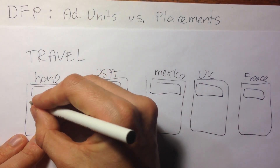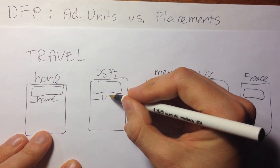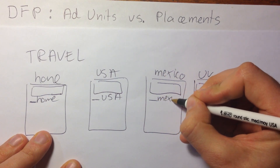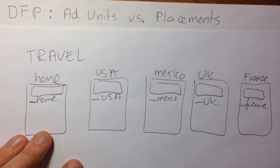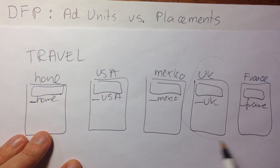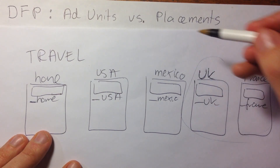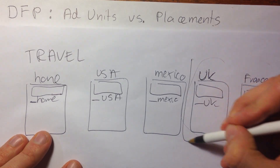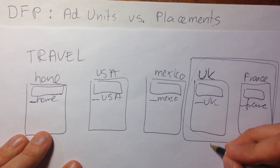For example, the first one will be underscore home, that one will be underscore USA, Mexico, UK and France. Now, let's say you want to target those two pages, UK and France. Usually you will have to select those two ad units as a target. However, if you are using placements, you can group those two ad units into a placement called Europe.